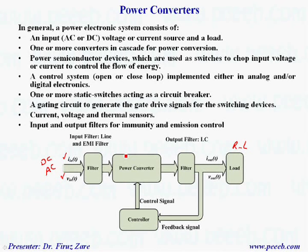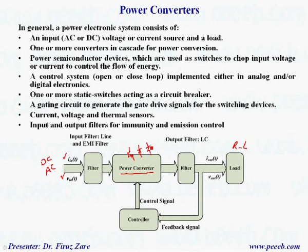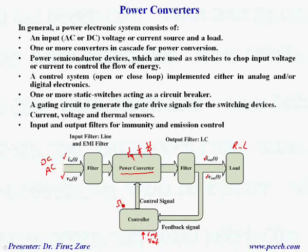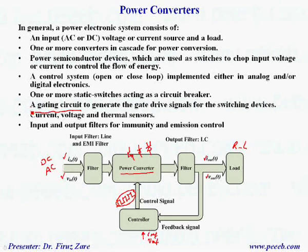Semiconductor devices in the power converters — inside the power converter, we have power switches: either control switches, diodes, or SCR/thyristor. We also have a controller consisting of analog or digital circuits, especially microcontrollers. By measuring the output voltage and current, the controller provides the gate signal to control the output voltage or current. Sometimes this signal is not suitable to turn off or turn on the power switches, so we need a gate drive system to be able to turn on and turn off the power switches.